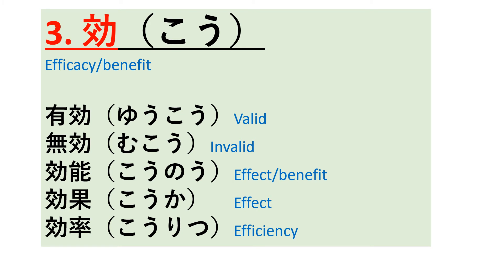In the third kanji, the radical is attached on the right side. The meaning of this radical is 'chikara,' which is related to strength. So the meaning of this kanji is efficiency, efficacy, or benefit.